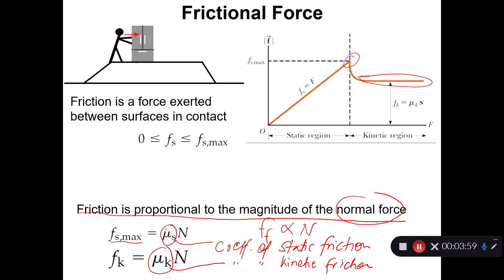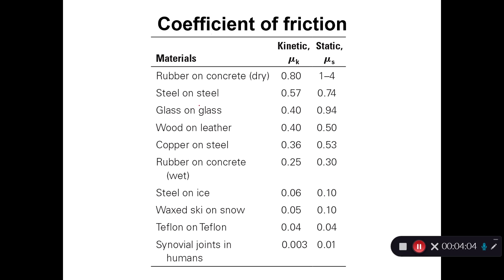Since Fk is less than Fs_max, it follows that μk must be less than μs. Looking at typical values: for steel on steel, μk is 0.57 while μs is 0.74 — confirming that μs is always larger. Different surface pairs give different values of μk and μs, and therefore different frictional forces.